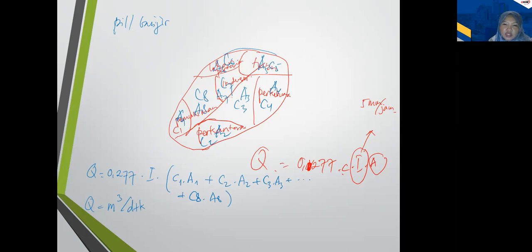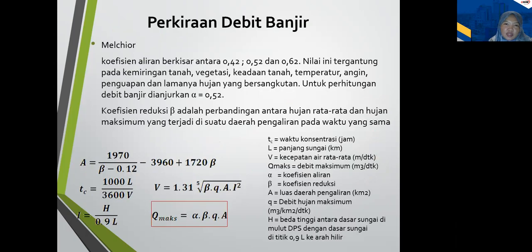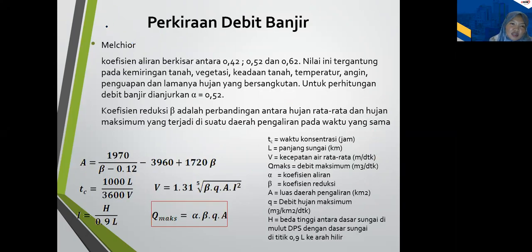Kemudian yang ini masih rumus rasional, tapi ada Melcior, Derwedwen, dan Haspar — itu orang luar.